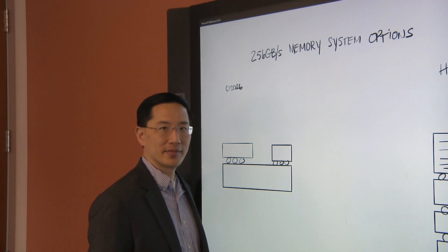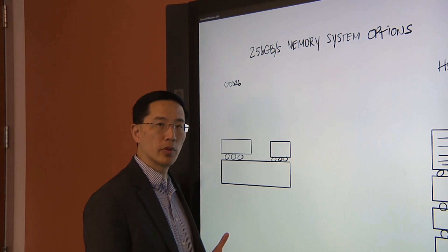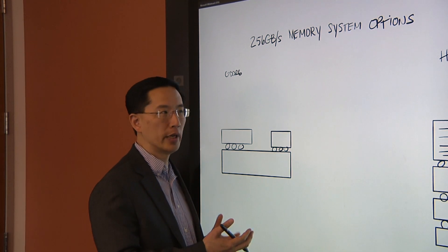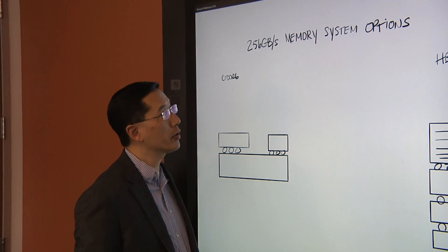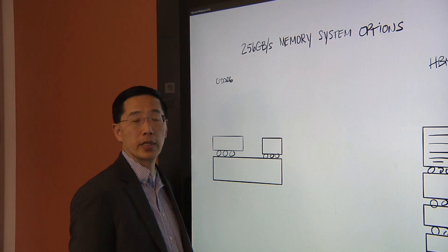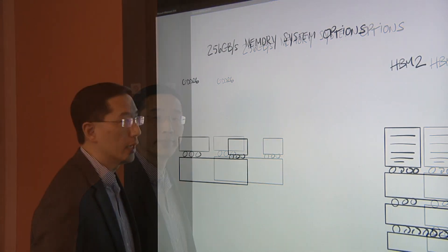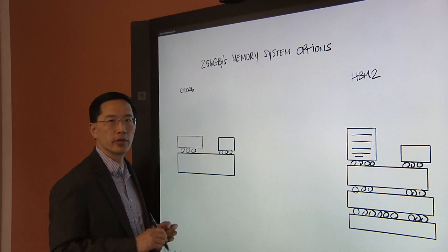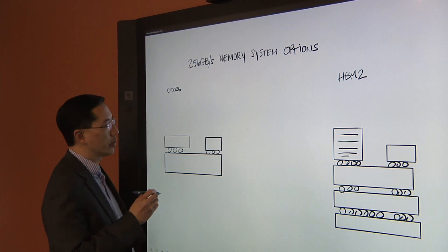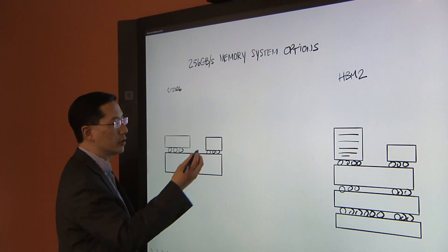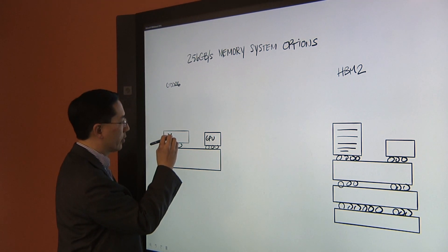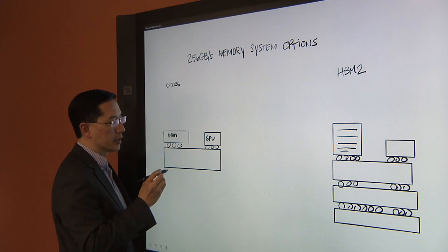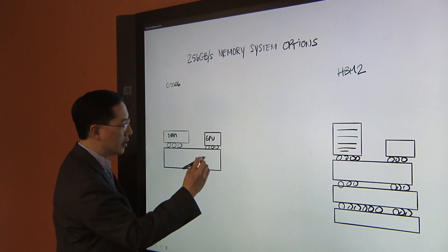Why don't you draw this out for us? I'd be happy to. So I'm going to show you the difference between how you'd implement a GDDR6 memory system and an HBM2 memory system. In a real-world example, I'm going to show you for a 256-gigabyte-per-second memory system, something that you would typically see in use today. And so on the left here, I'm going to start by showing you how you'd implement this with GDDR6. And the way you would do this is you would have four DRAMs connected to a processor. So this is going to be my GPU, and this will be one of my DRAMs.